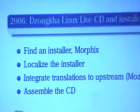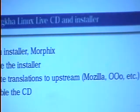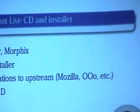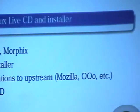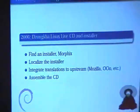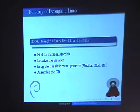In 2006, they released the Debian Dzongkha Linux live CD and installer — a single CD that can be run as a live CD and also used to install a completely localized system. They didn't use the Debian installer because it wasn't ready at that moment, so they used the Morphix installer, which was very easy to customize and translate. They integrated their applications and translation work upstream, pushing all their work on Mozilla, OpenOffice, and so on back to upstream.